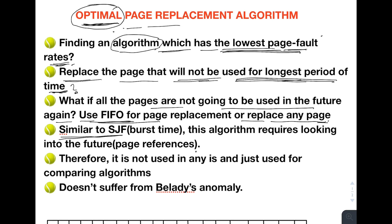This is similar to the SJF process scheduling algorithm, which was based on the next burst time of a process and was very difficult to predict. Similarly, this algorithm also requires looking into the future — specifically, future page references — to find out which page will not be used for the longest period of time.